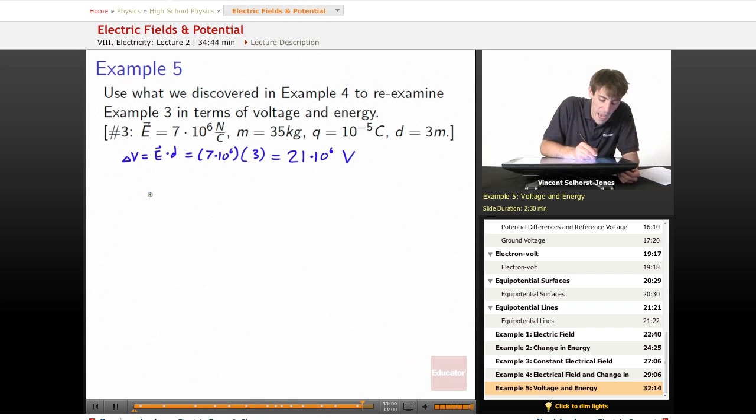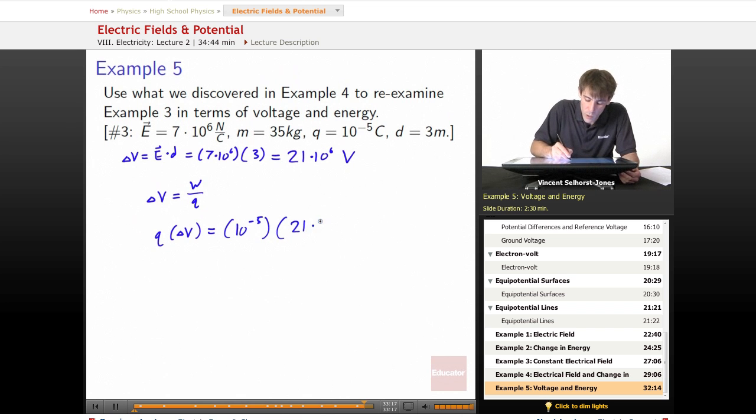Well, if we want to know what the work done is, we know change in volts is equal to the work over the charge involved. So the charge involved times that change in voltage—well, our charge involved is 10 to the negative 5th, the change in voltage is a whopping 21 times 10 to the 6th volts, and so that's going to get us 210 joules.